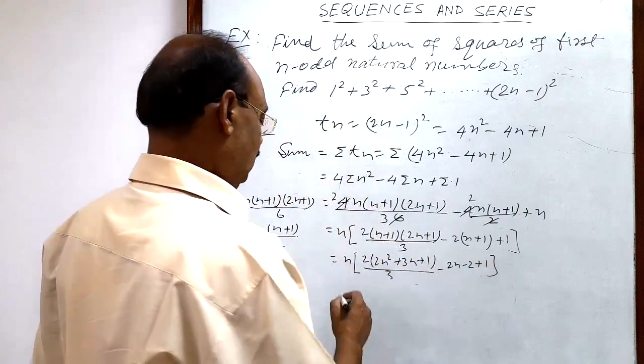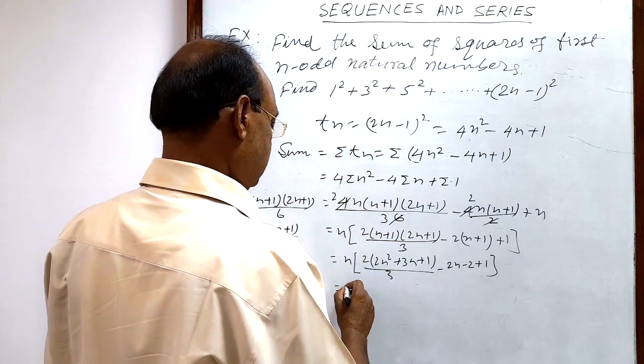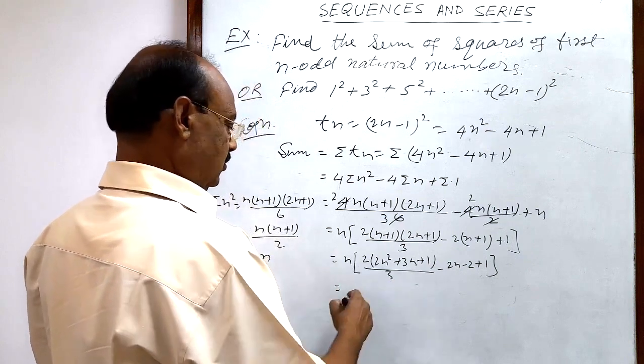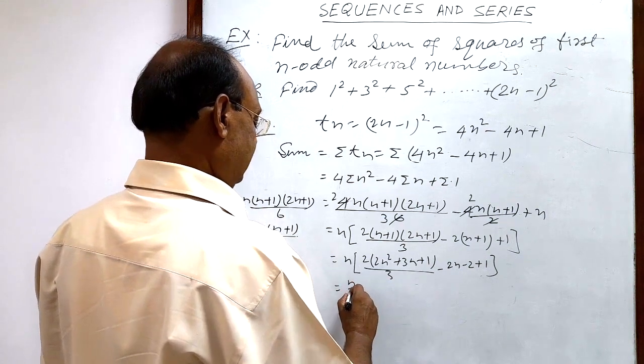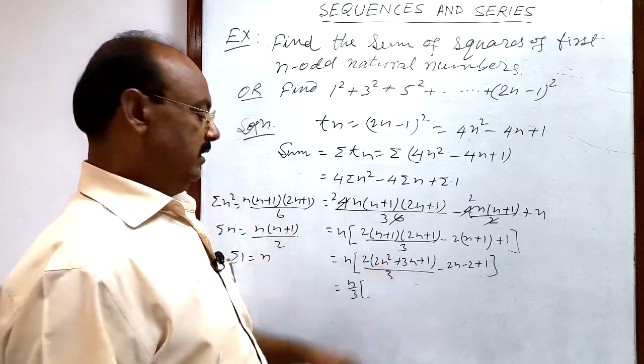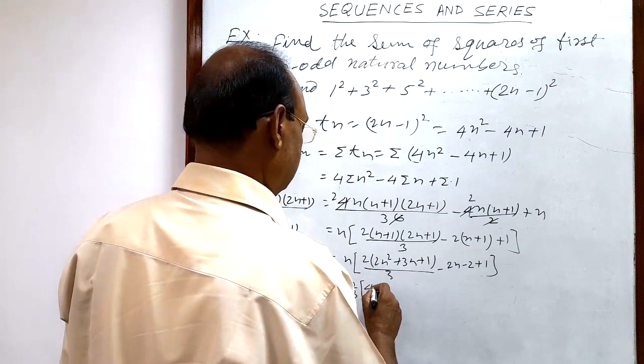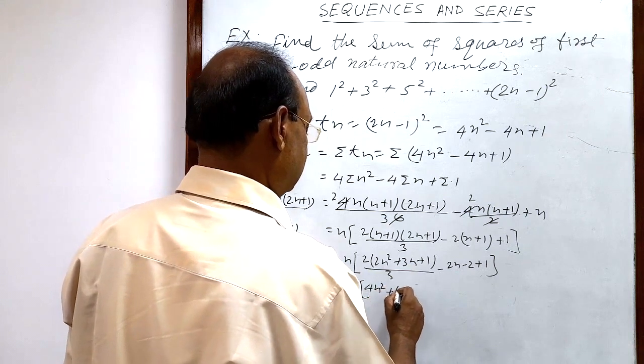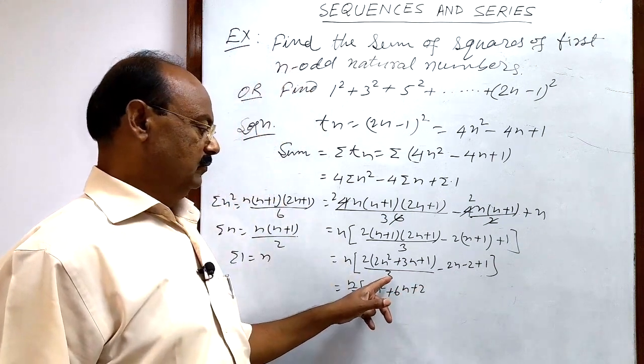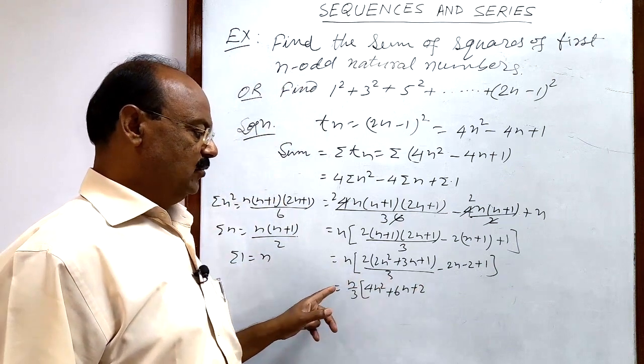Further, we will simplify it. So this is, let us take this 3 in denominator common. So this is n/3 and this 2 will be multiplied with this factor. So this is 4n² + 6n + 2, and this 3 has been taken outside.